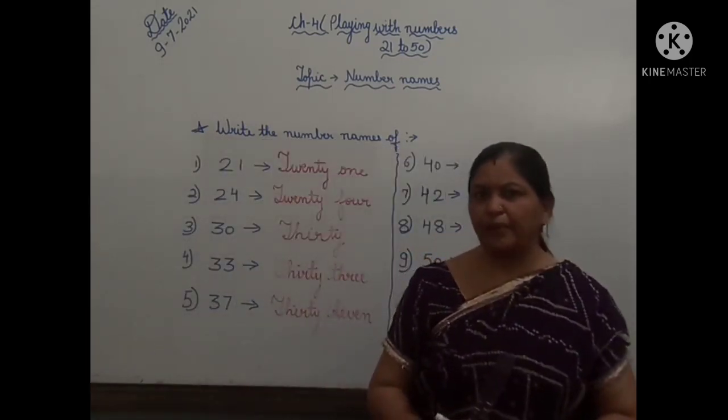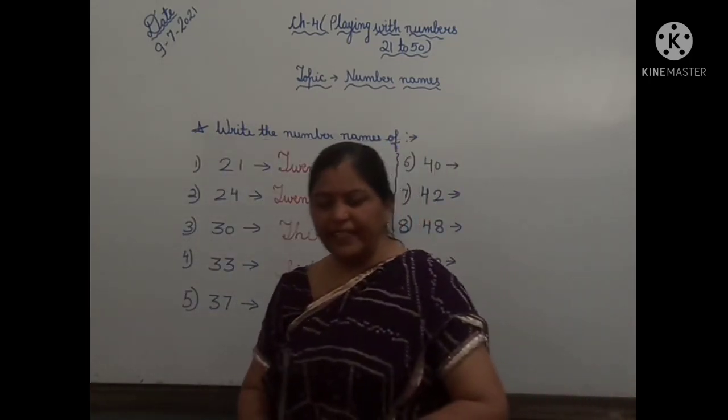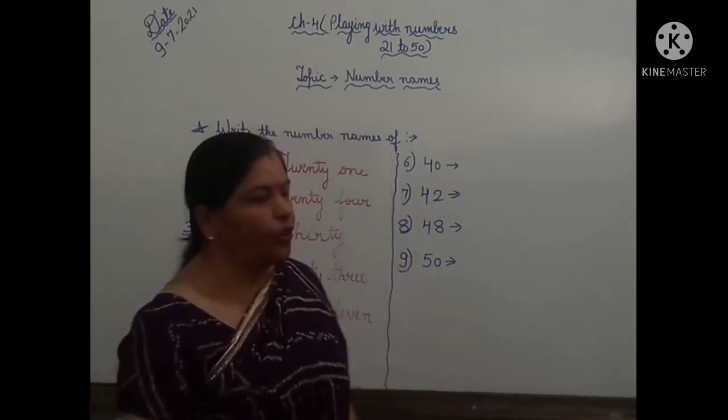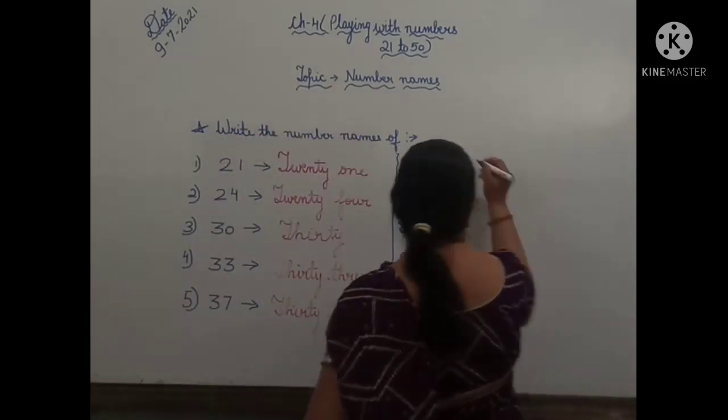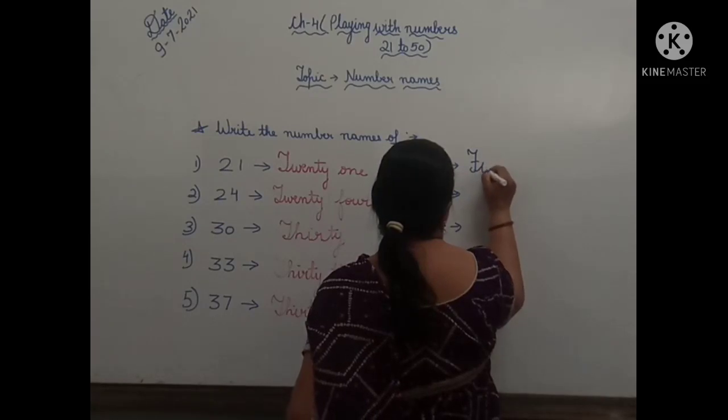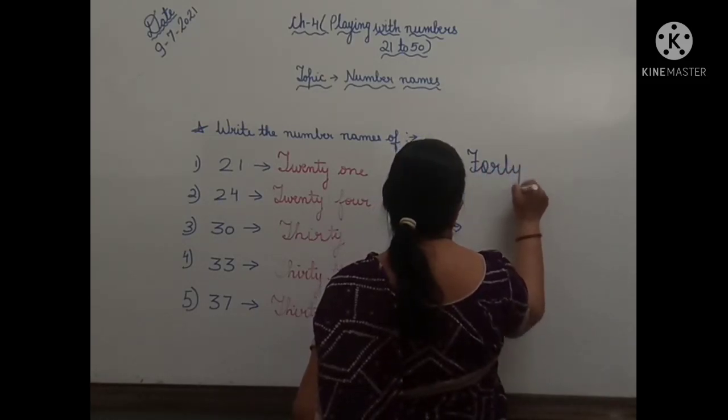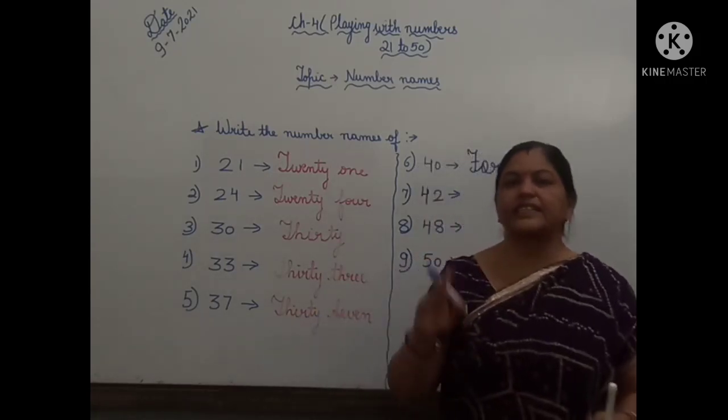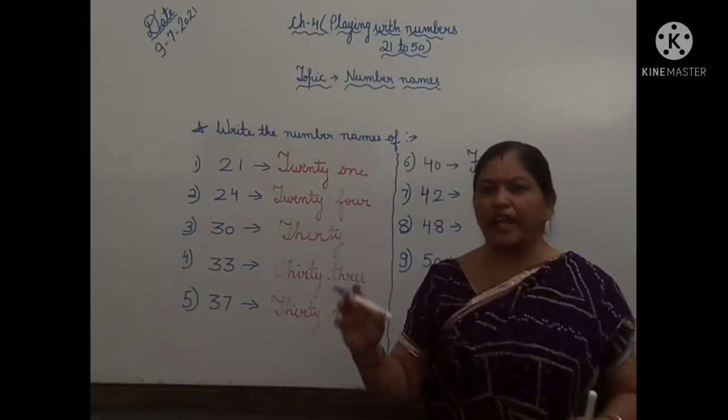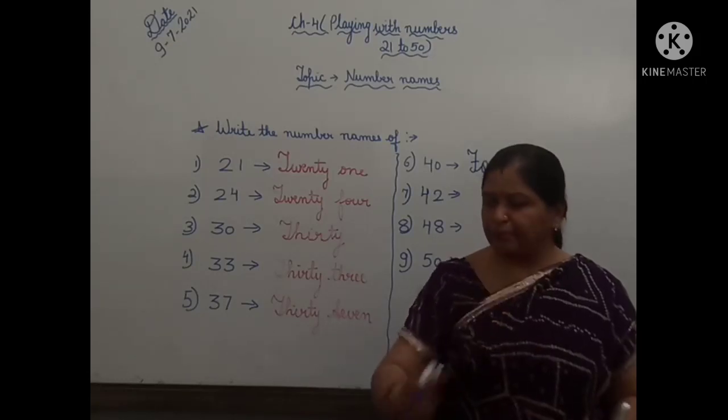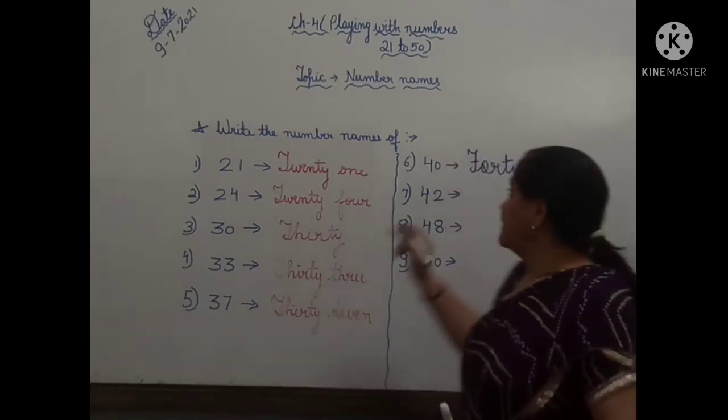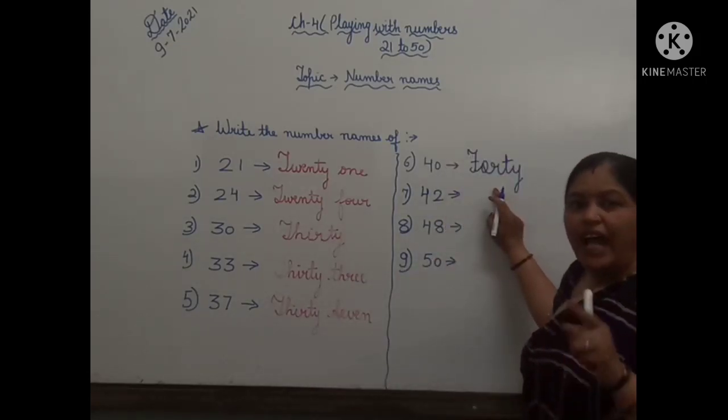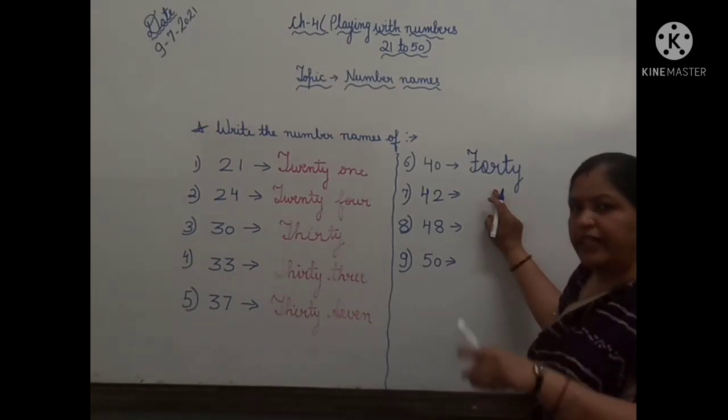Now children, what is the next number? Our next number is 40. So what is the spelling of 40? F-O-R-T-Y. See children, some of the children are writing the spelling of 40 as F-O-U-R-T-Y. That is absolutely wrong. The spelling of 40 is F-O-R-T-Y.